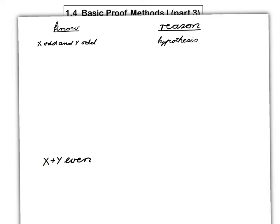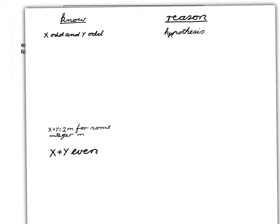and I insert here what it means to say that x plus y is even. So to say that x plus y is even is to say that there exists an integer m such that x plus y is equal to 2 times m.